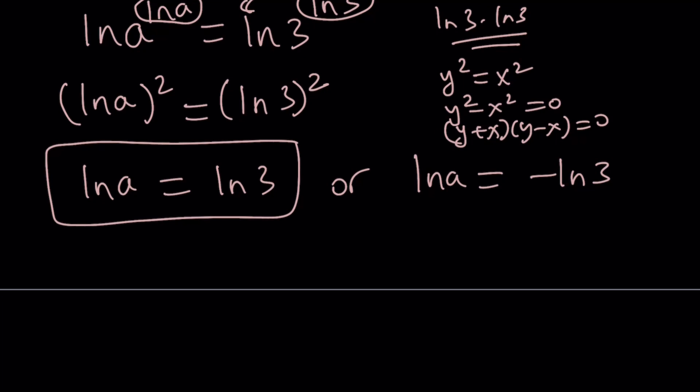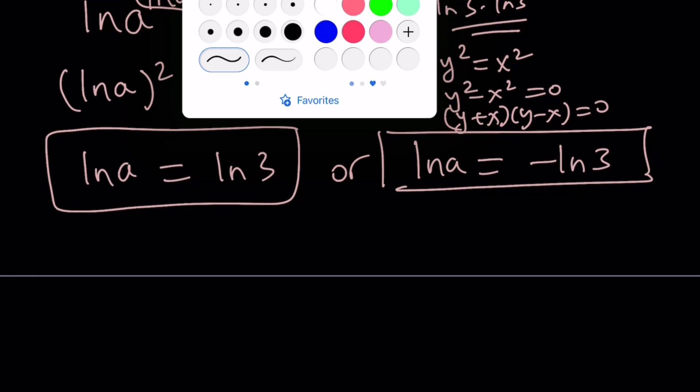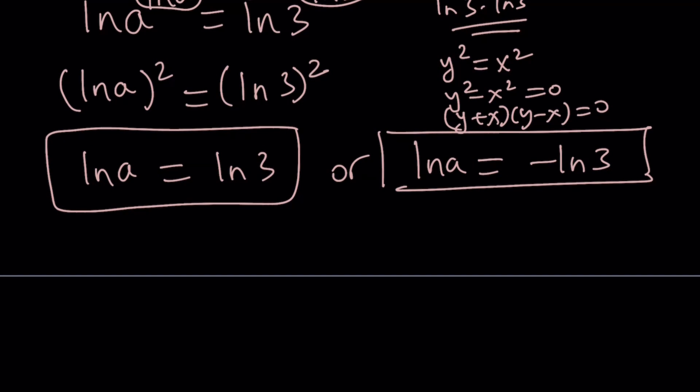So, we have two equations now. And that could indicate that there are at least two solutions, right? We know the obvious one. But let's go ahead and explore a little bit more. So, this first equation, ln a equals ln 3, obviously gives us a equals 3. That's one of the solutions. How about the second one?